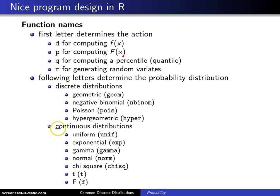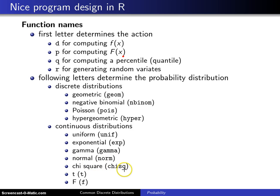In chapter 5, we're going to be covering continuous distributions where you will see unif for the uniform distribution, exp for the exponential, gamma for the gamma distribution, and norm for the normal distribution.